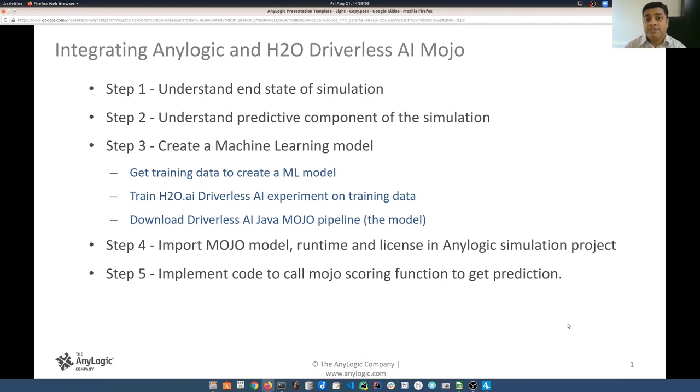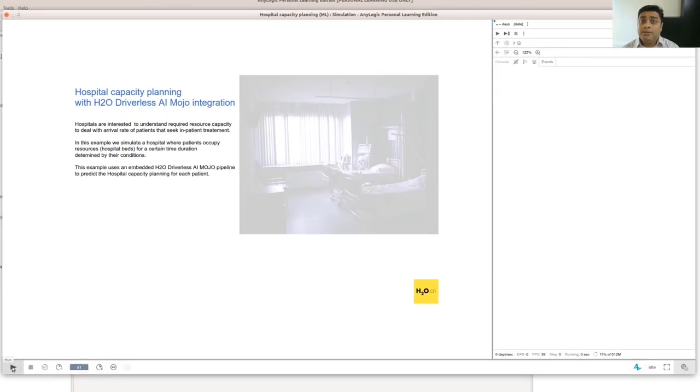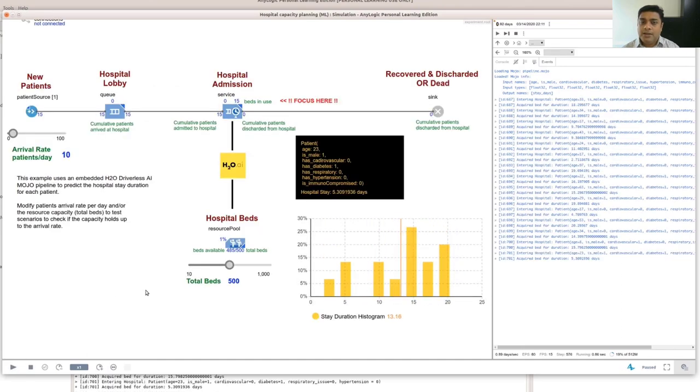Once the experiment is complete in driverless AI, we can get a H2O Java mojo, which can be deeply integrated into any AnyLogic simulation experiment. And we're going to talk about how that is done. And then finally, we'll show you the end-to-end completed code of the simulation. Okay, let me just load the simulation and then we can talk in detail about it. Here, we are simulating a hospital that operates in a county. The hospital is interested to understand what is the daily patient arrival rate of hospitalization that it can sustain given a certain number of hospital beds that are there. We also assume that the hospital is aware about the demographics of the county in which operates. Hence, it can draw the patients from the distribution of that population.